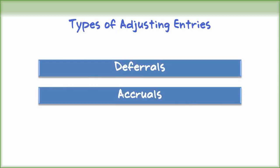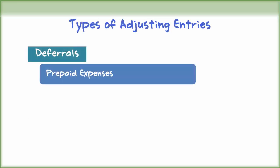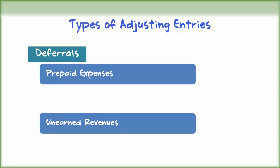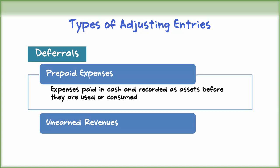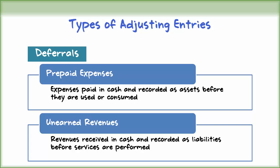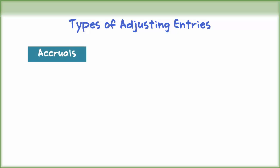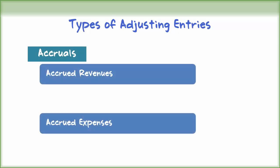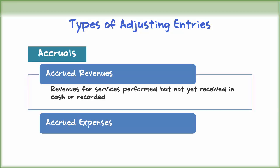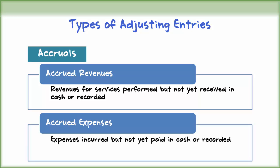Adjusting entries are needed in cases of deferrals and accruals. Deferrals are further classified into prepaid expenses and unearned revenues. Prepaid expenses are expenses paid in cash and recorded as assets before they are used or consumed. Unearned revenues are revenues received in cash and recorded as liabilities before services are performed. Accruals are further classified into accrued revenues and accrued expenses. Accrued revenues are revenues for services performed but not yet received in cash or recorded. Accrued expenses are expenses incurred but not yet paid in cash or recorded.